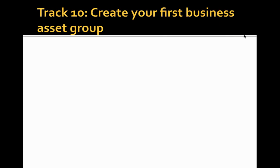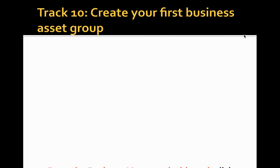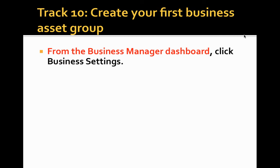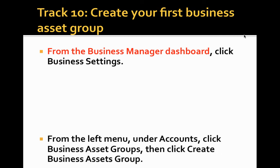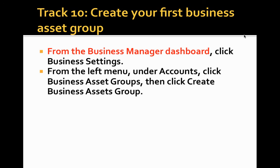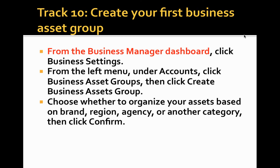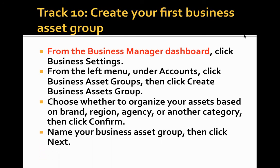Track ten: Create your first business asset group. From the Business Manager dashboard, click Business Settings. From the left menu, under Accounts, click Business Asset Group, then click Create Business Asset Group. Choose whether to organize your assets by brand, region, agency, or another category, then click Confirm. Name your business asset group, then click Next.